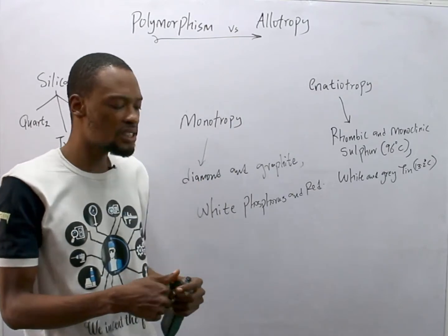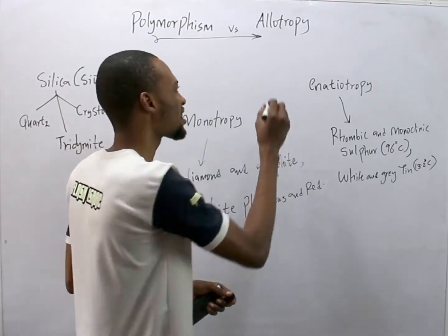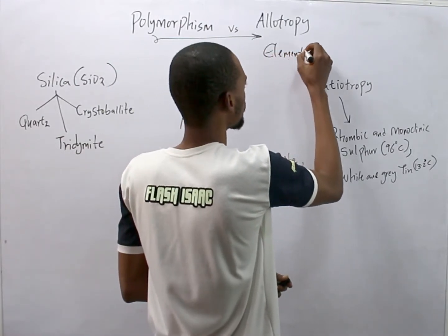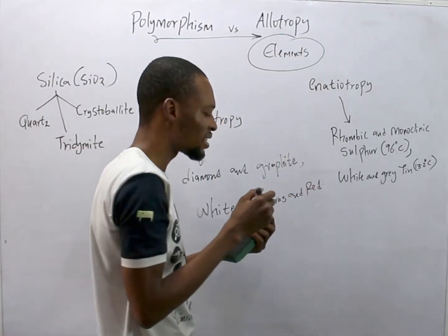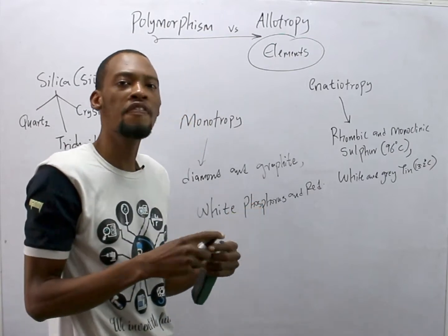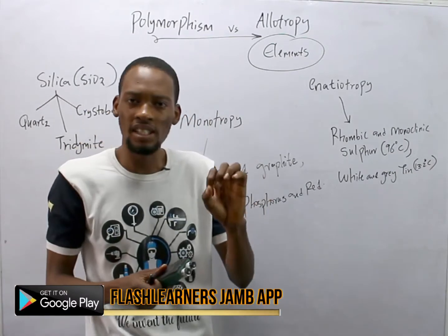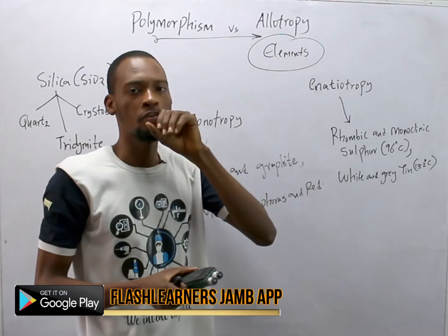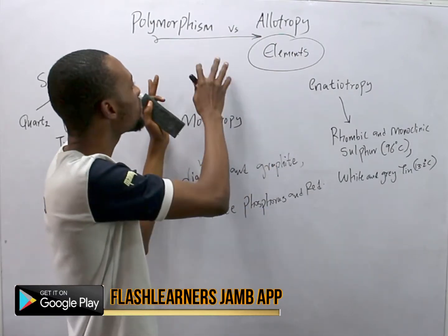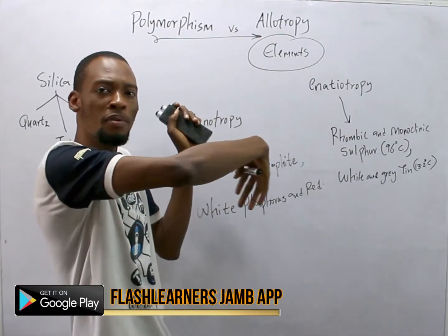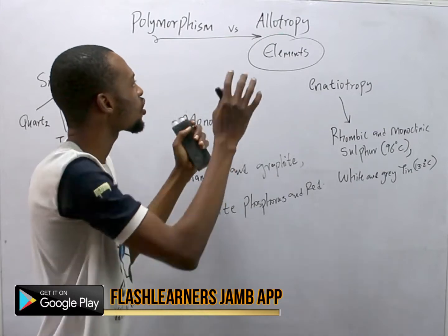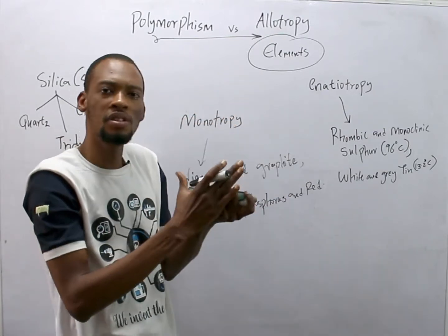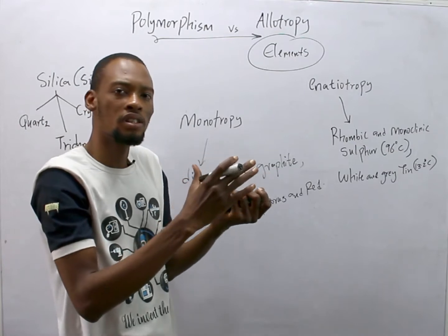Allotropy is when elements exist in different forms in the same physical state — that is referred to as allotropy. Polymorphism is the umbrella term, the general theme for substances that exist in different forms under the same physical state.